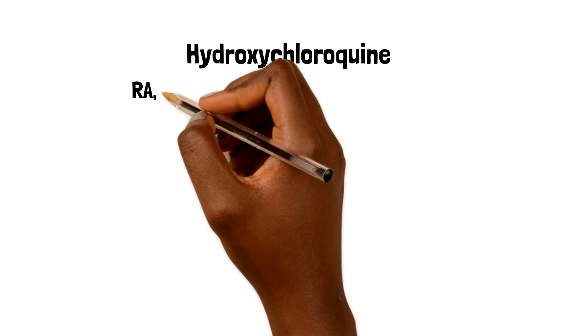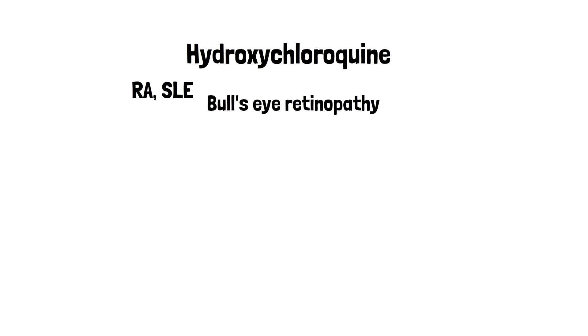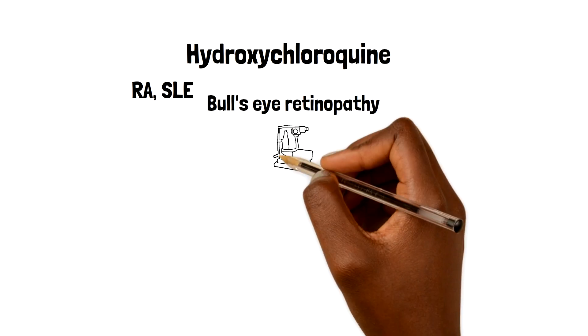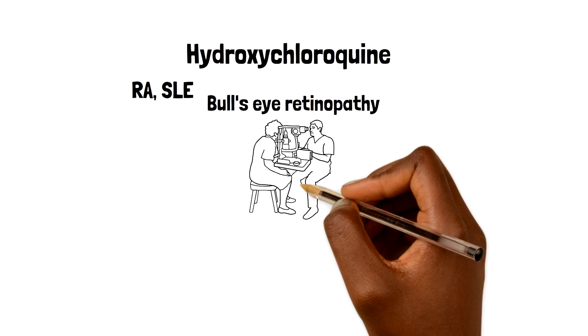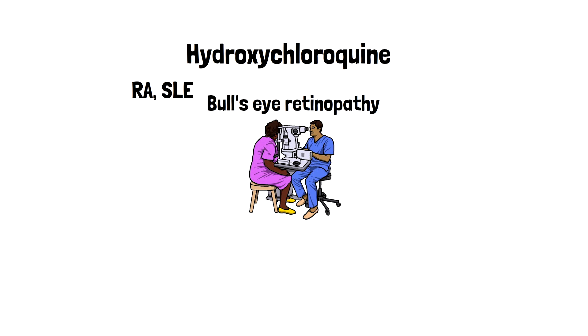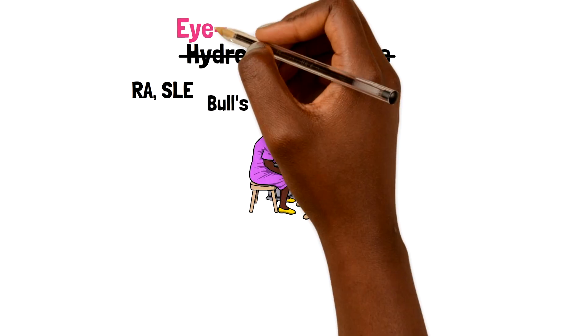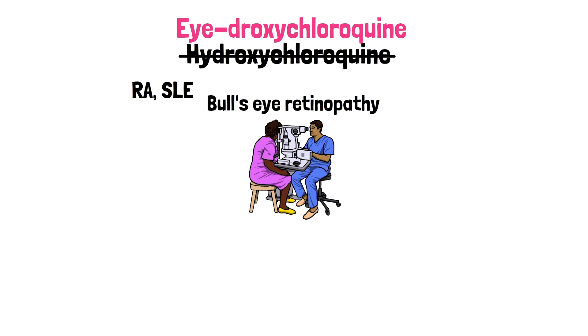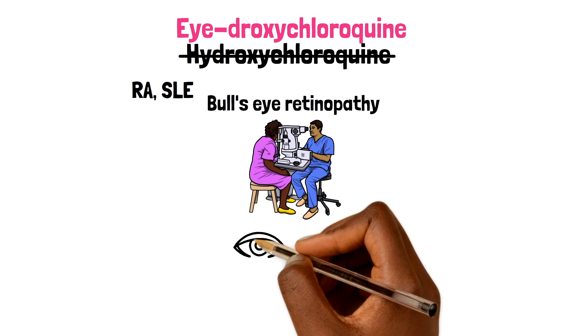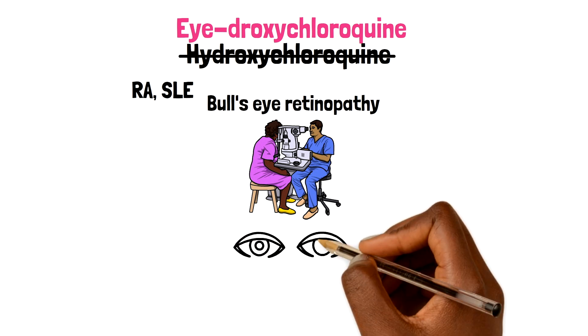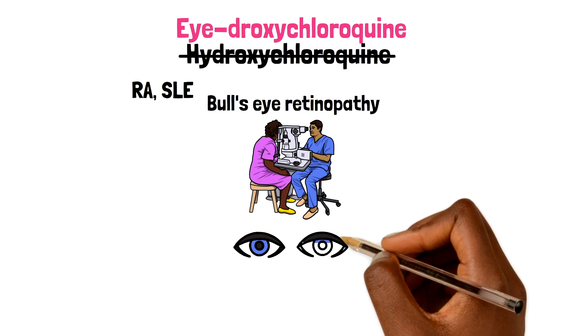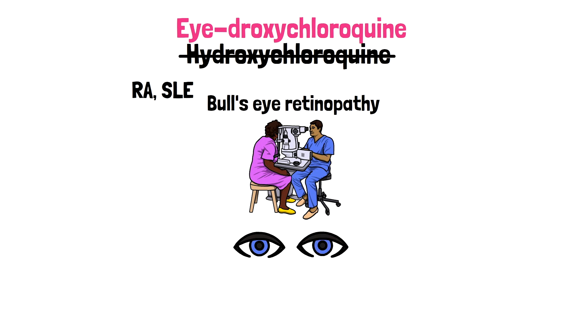Hydroxychloroquine is used to treat conditions such as rheumatoid arthritis and SLE. One possible side effect of toxicity is bull's eye retinopathy, which describes the appearance of the back of the eye on examination. The way to remember the side effects with hydroxychloroquine is by referring to it as hydroxychloroquine. In view of the side effect of retinopathy, ophthalmological examination at baseline and annual screening is generally recommended.